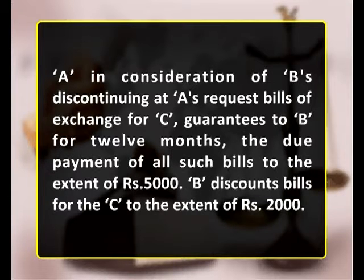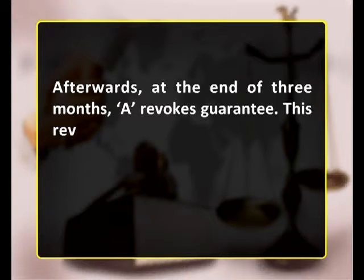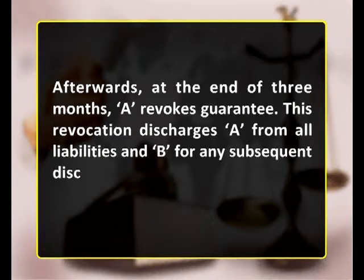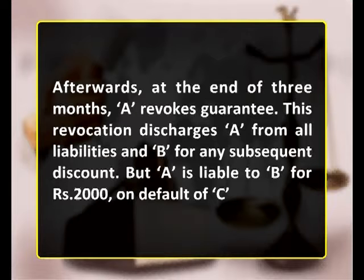B discounts bills for C to the extent of rupees 2000. Afterwards, at the end of three months, A revokes the guarantee. This revocation discharges A from all liabilities to B for any subsequent discount, but A is liable to B for rupees 2000 on default of C.